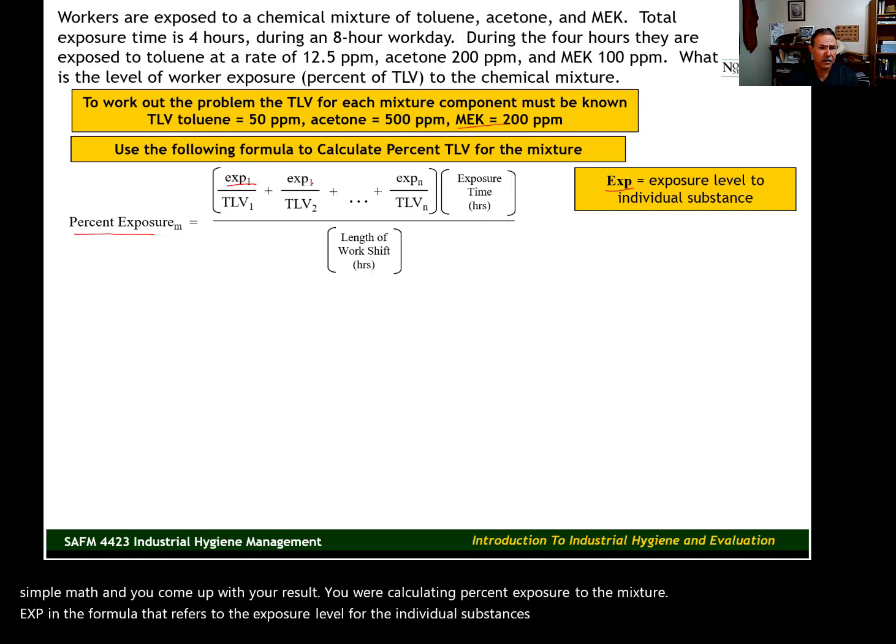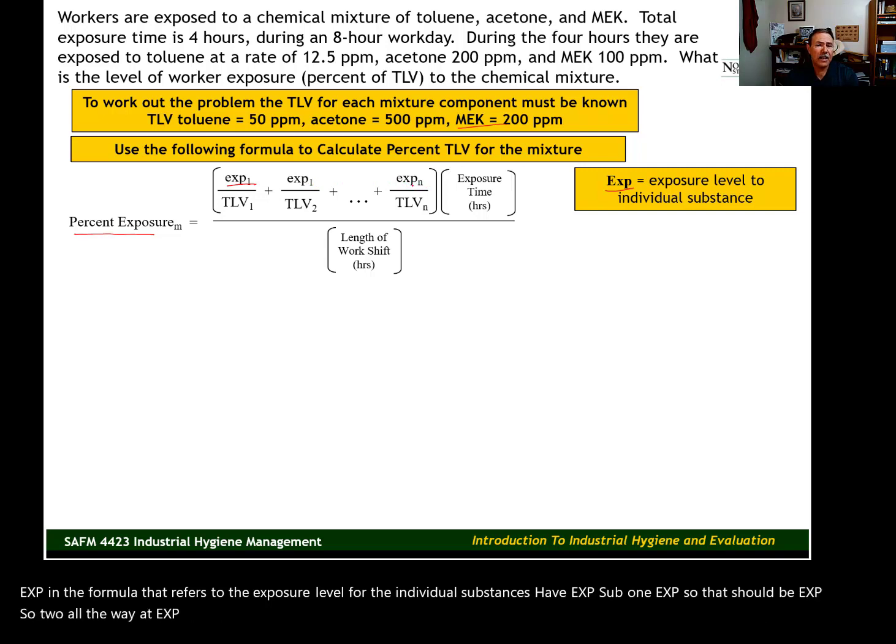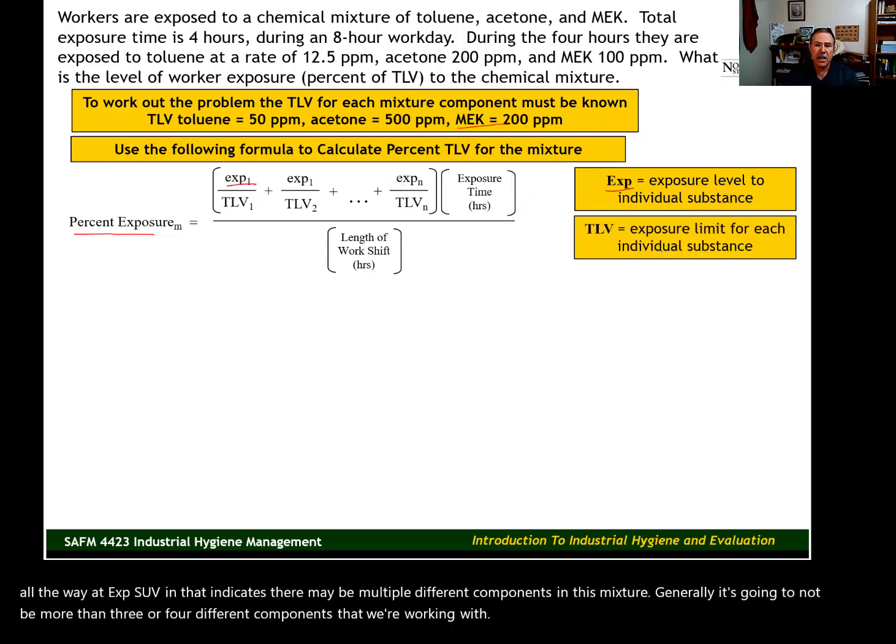EXP in the formula refers to the exposure level for the individual substances. You have EXP sub 1, EXP sub 2, all the way out to EXP sub n. That indicates there may be multiple different components in this mixture. Generally, it's going to not be more than three or four different components that we're working with. TLV—that's the threshold limit value for each of the different substances.